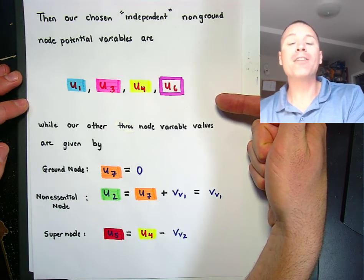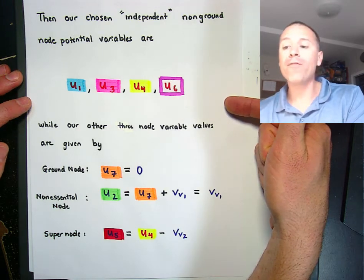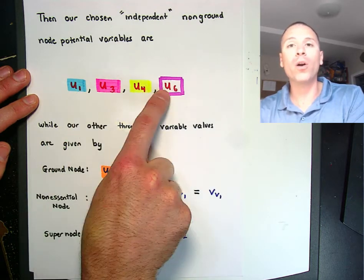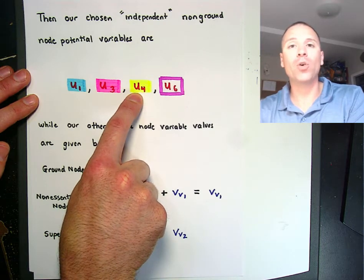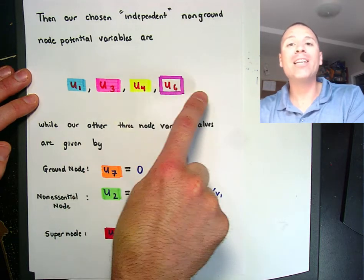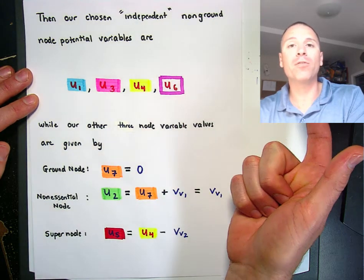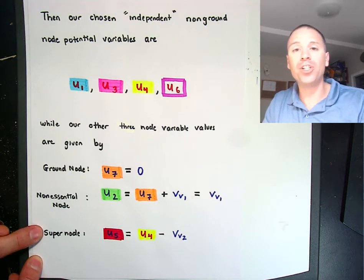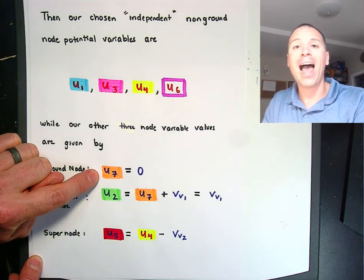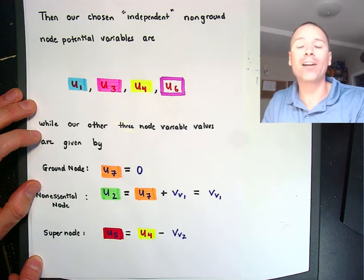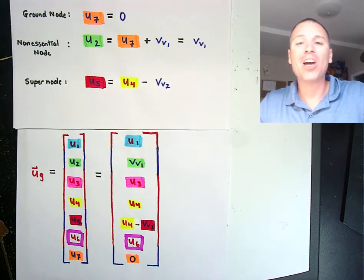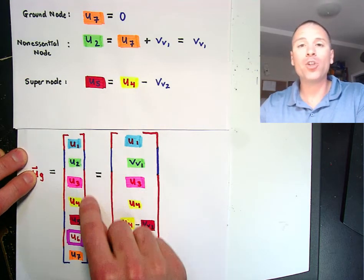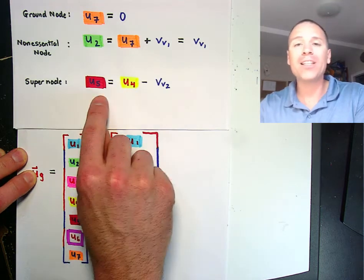From our seven potentials u1 through u7, we focused on four: u1, u3, u4, and u6. Three of those were ordinary nodes; one was the independent node potential in generalized node two. We grounded generalized node one, eliminating a bunch of node potentials associated with a known ground node. In our reduction we used these relationships to delete u2, u5, and u7 as dependent information. The goal is to eliminate redundant or dependent information in the vector u sub g.